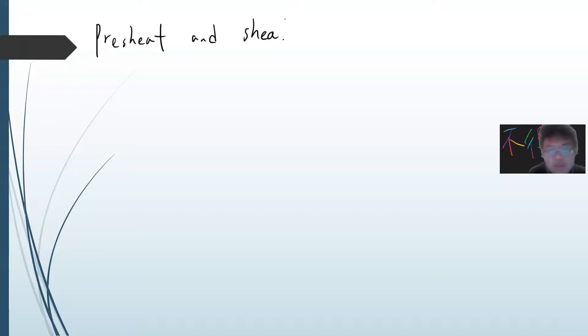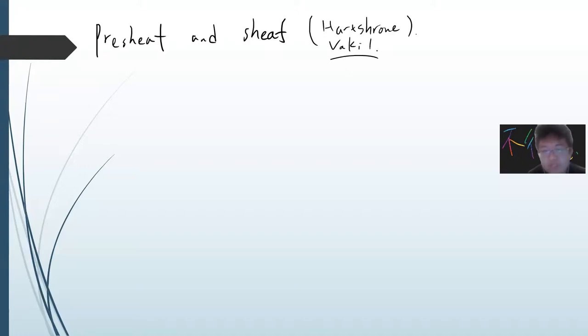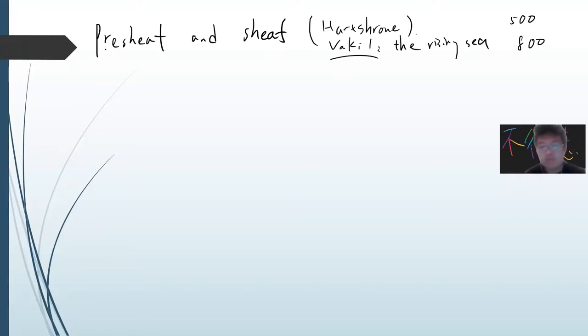In this video I want to introduce the pre-sheaf and sheaf. This is somewhat like algebraic geometry 101. The textbooks I reference are Hartshorne — about 500 pages — and also Vakil, who has a book called 'The Rising Sea of Algebraic Geometry,' which is about 800 pages. I try to take their merits and introduce the ideas here.